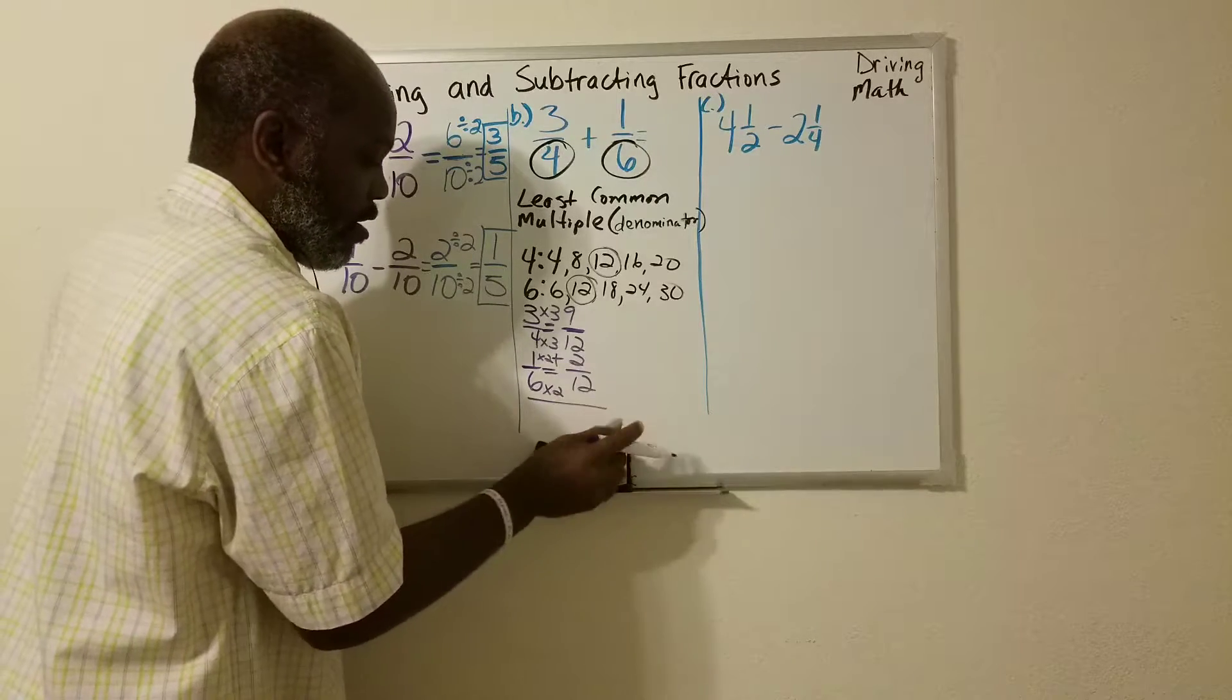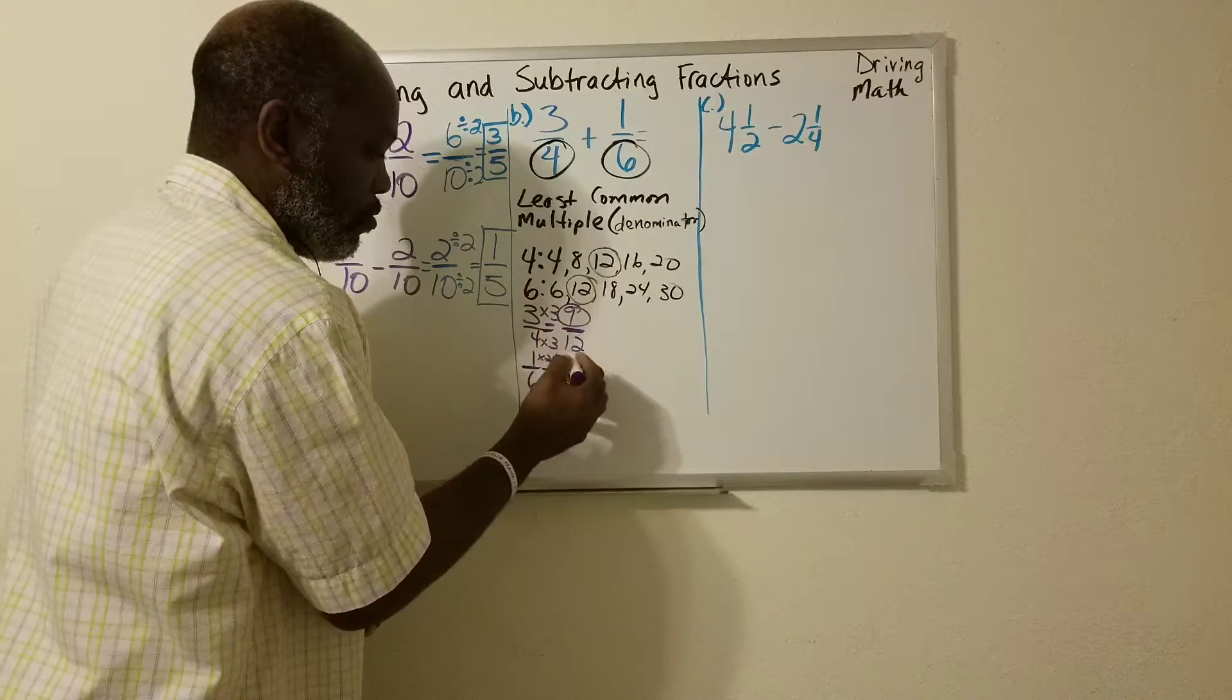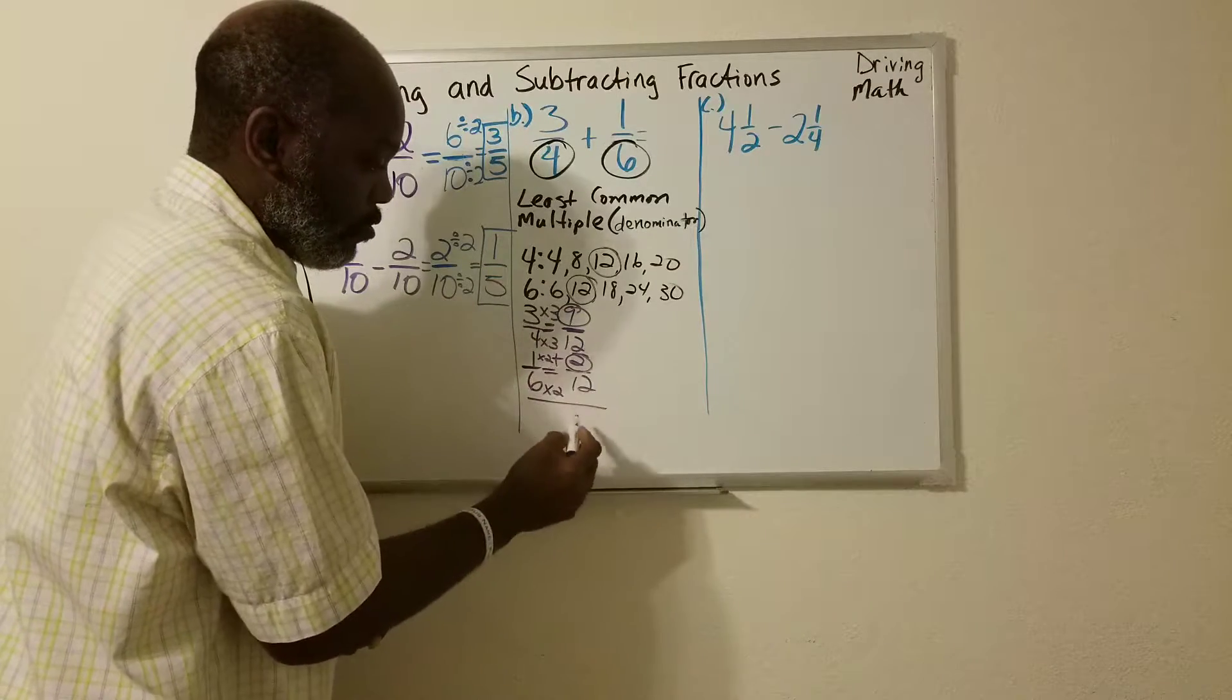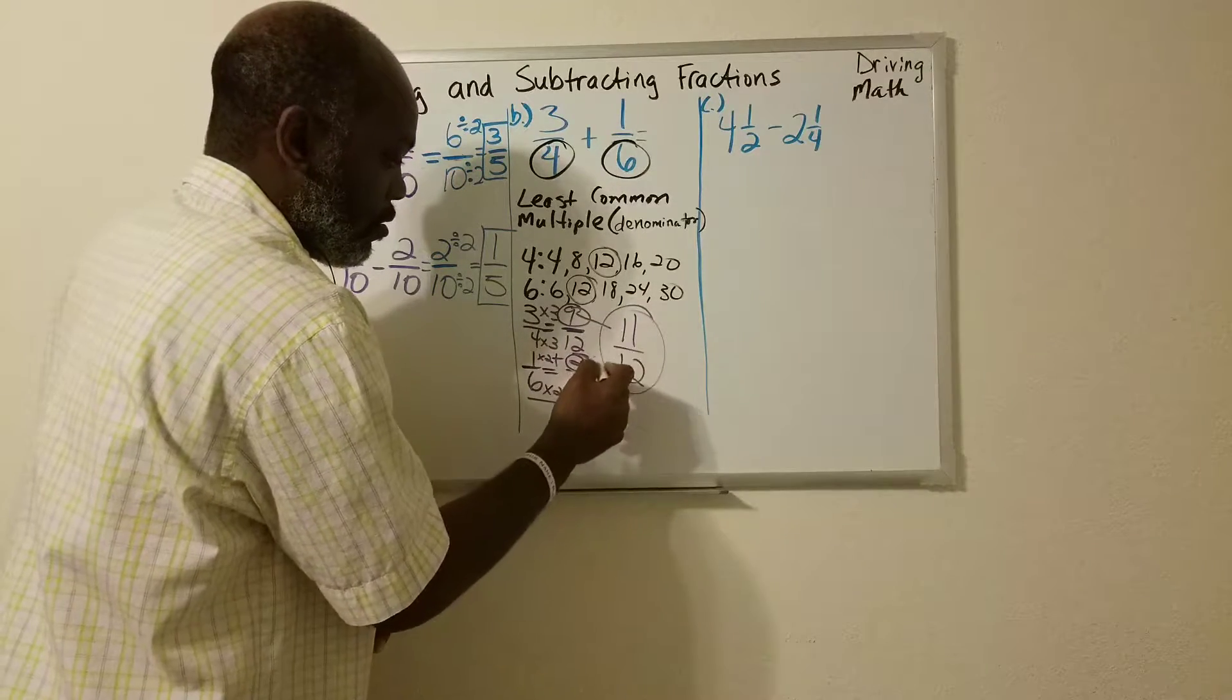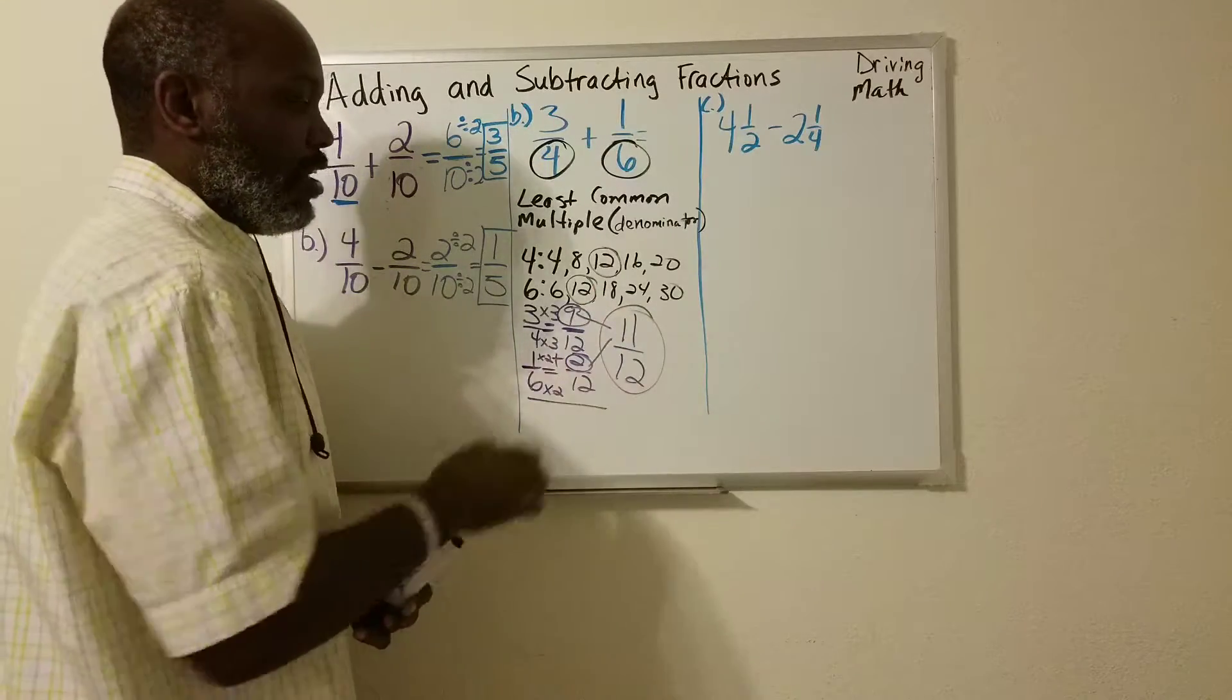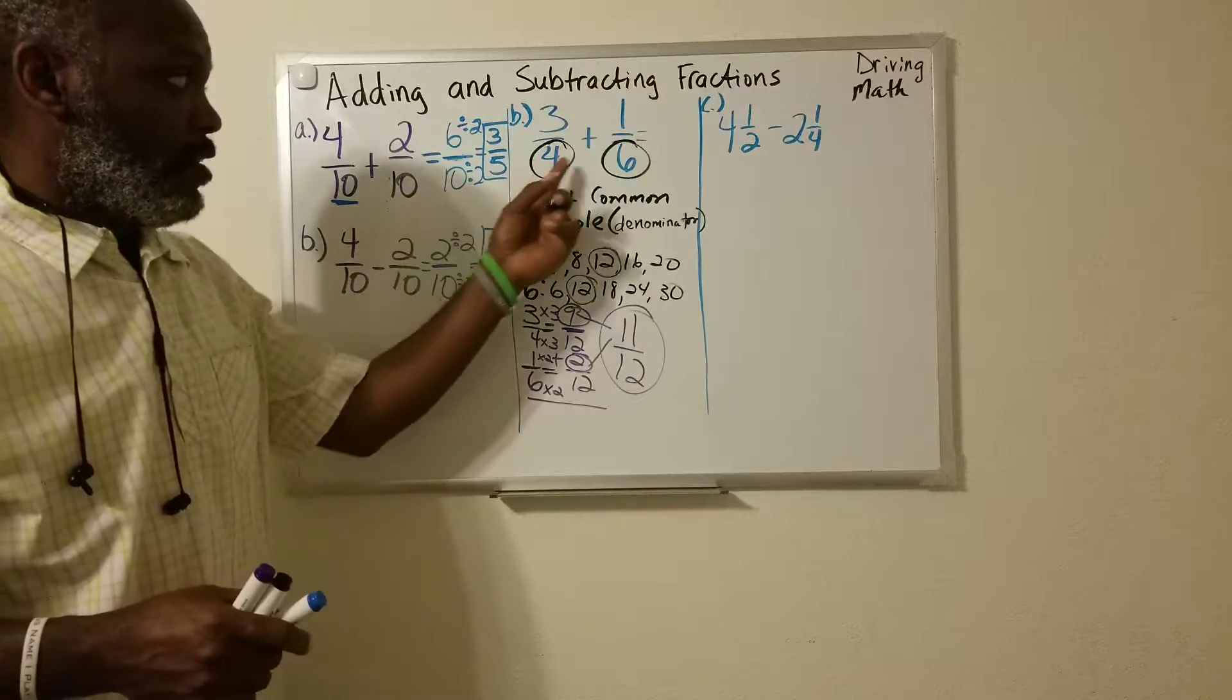So what do I have? I have 9 plus 2. Because they have the same denominator. So I end up with 11 over 12. And it is reduced. And that's how you add fractions if they have a different denominator.